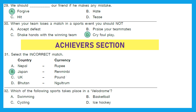Question 32: Which of the following sports takes place in a velodrome? A velodrome is a cycle racing track, typically with steeply banked curves. Now you know the answer — it is option C, cycling. Cycling takes place in a velodrome.